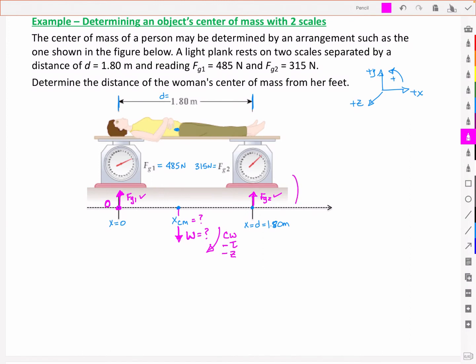Fg2 wants to rotate it upwards in this direction, so it's a positive torque. By right hand rule it would point along the positive z-axis.